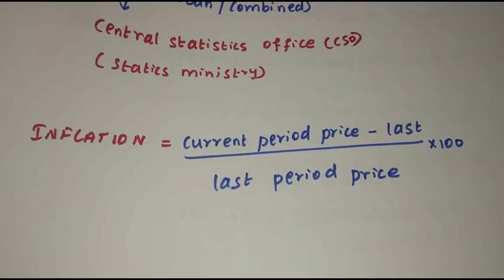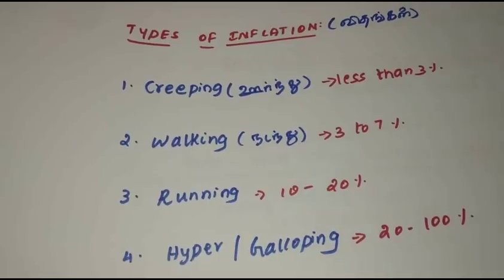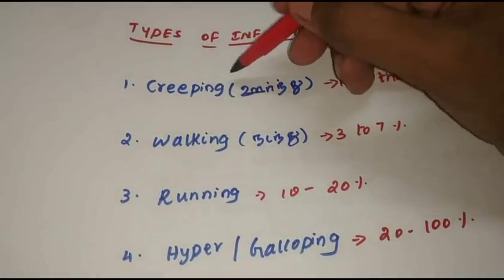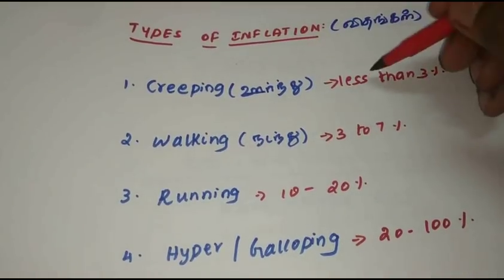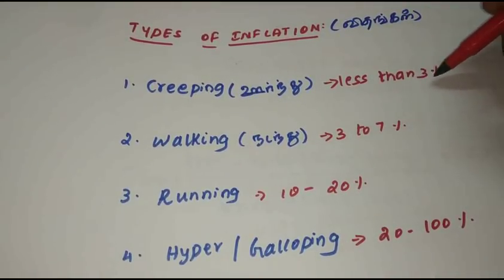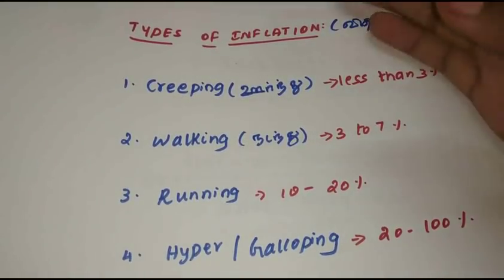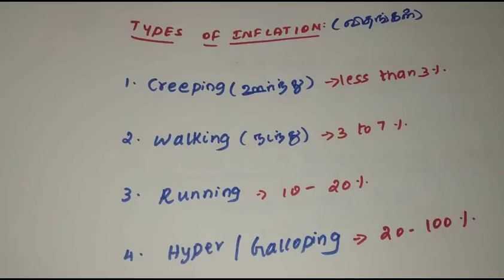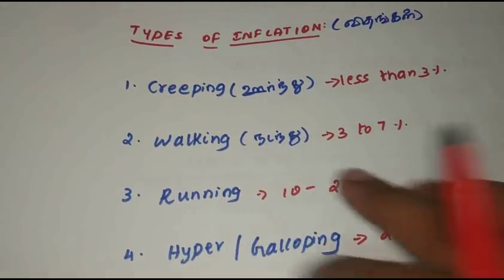Next — types of inflation. If you look at the whole picture, there are 4 types. First is creeping inflation — less than 3%. If you have inflation at 3%, consider values of 10,000 dropping to 6,000, then 4,000, then 3,000.